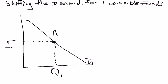Now the thought experiment I want to conduct is: what if one of the things we're holding constant changes, but we keep the real interest rate fixed? What you have to ask yourself is, at the end of this change, will firms want to borrow more or will they want to borrow less? That will tell us whether the demand curve for loanable funds shifts to the right or to the left.